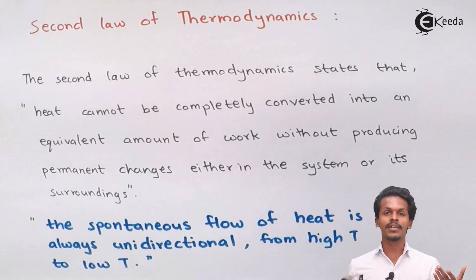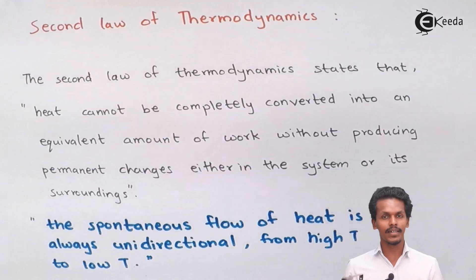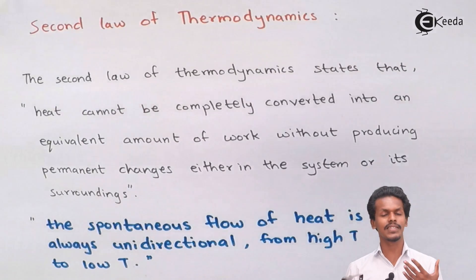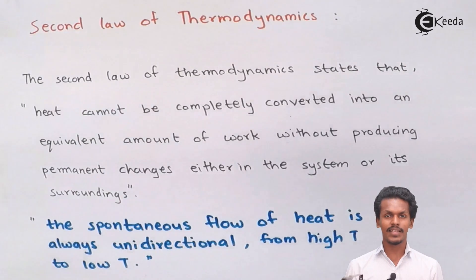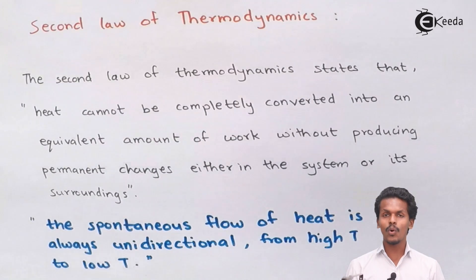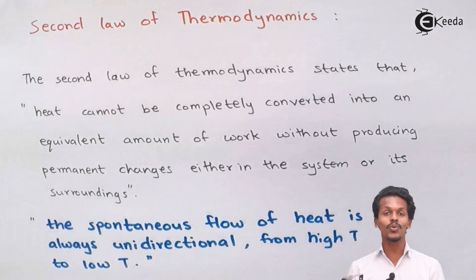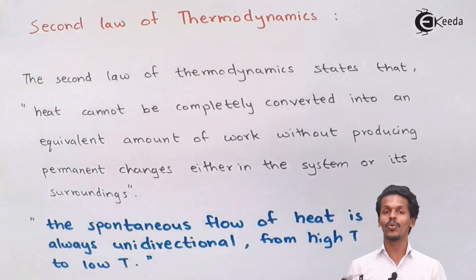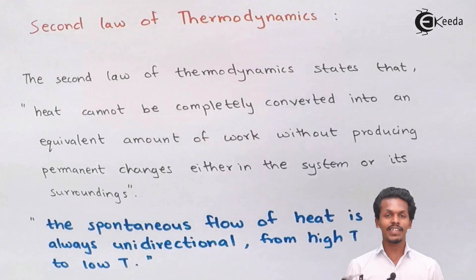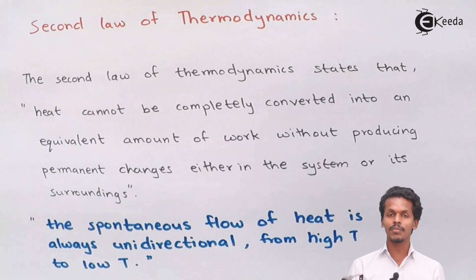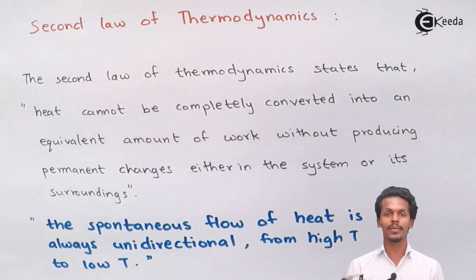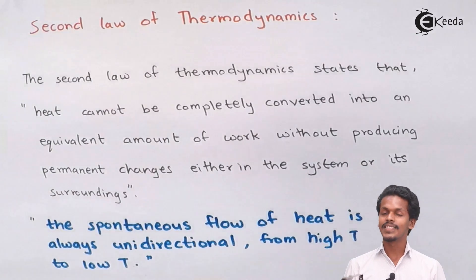In the first law of thermodynamics, we studied a few applications in isochoric, isobaric, adiabatic, and isothermal processes. But this second law says we cannot convert the amount of heat into an equivalent amount of work — there will be certain permanent changes that will occur either in the system or in the surroundings. That is the statement of the second law of thermodynamics.